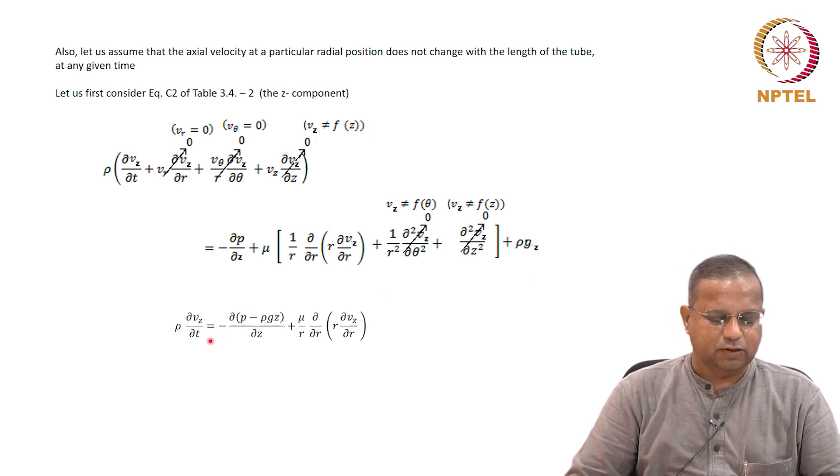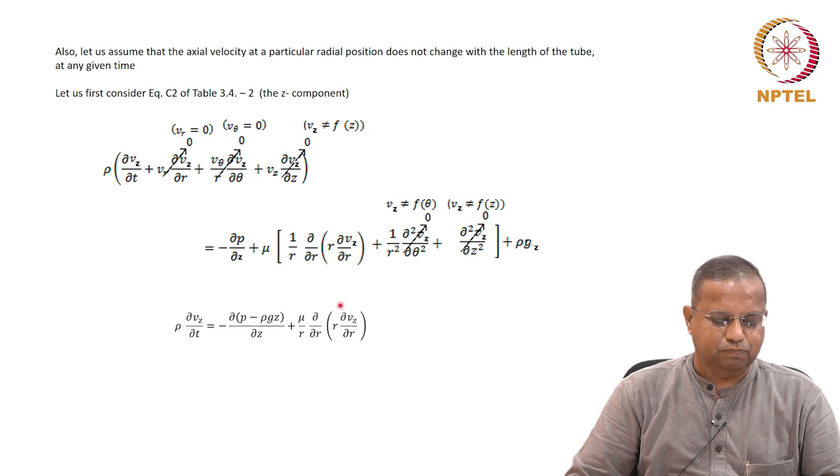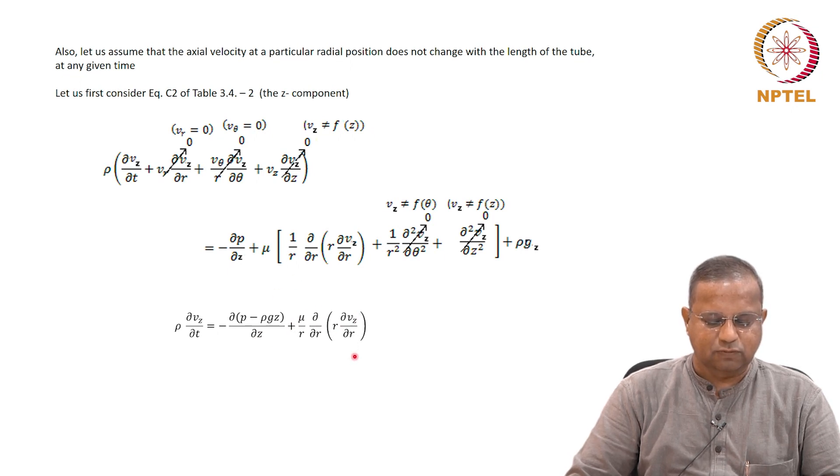What this turns out to be is: rho(dv_z/dt) = -d(p + rho*g*z)/dz + (mu/r)(d/dr)(r*dv_z/dr). This is equation 3.6-1.